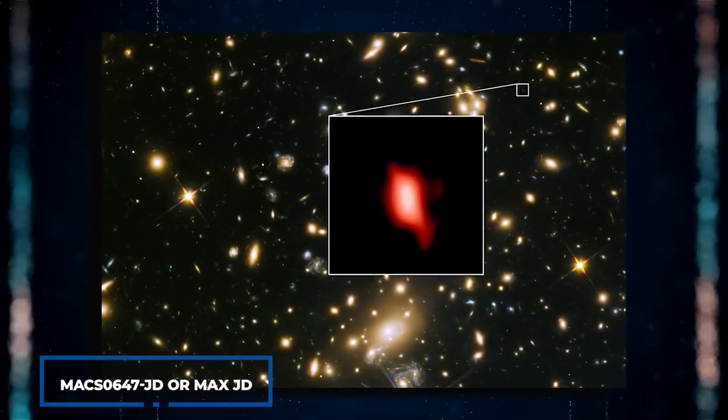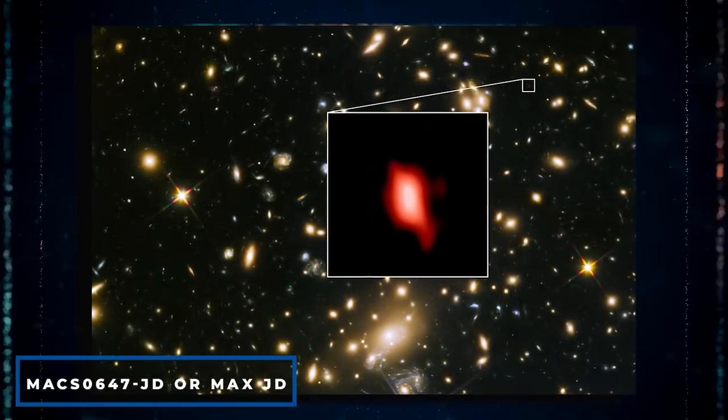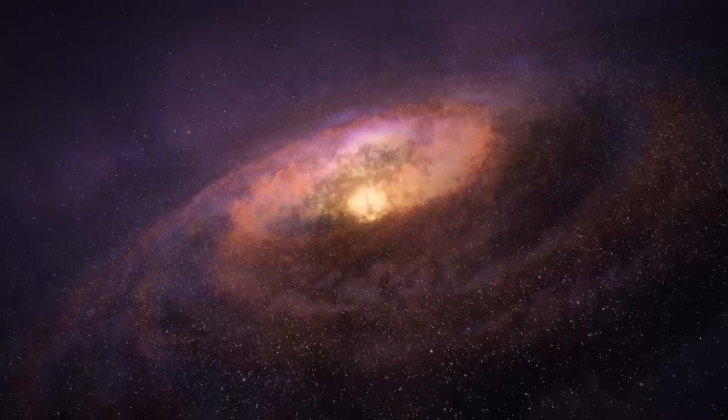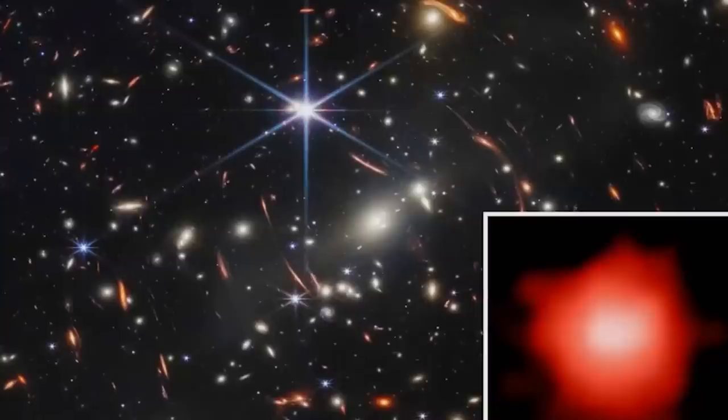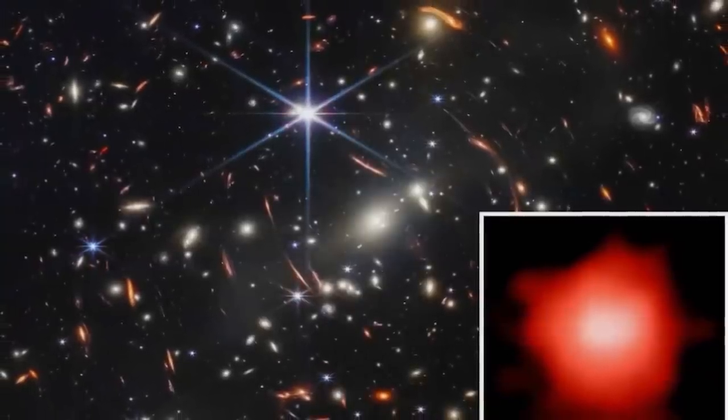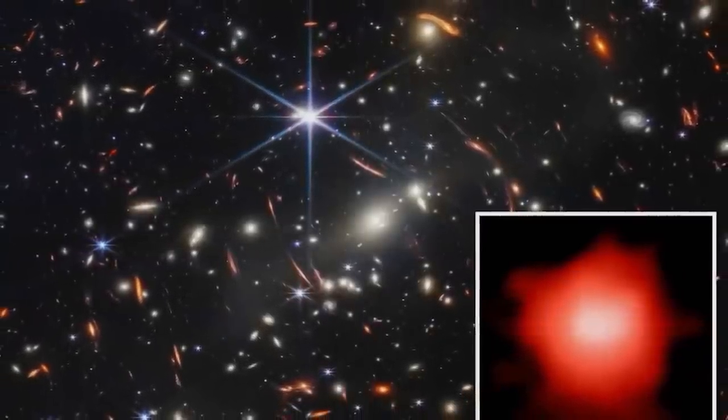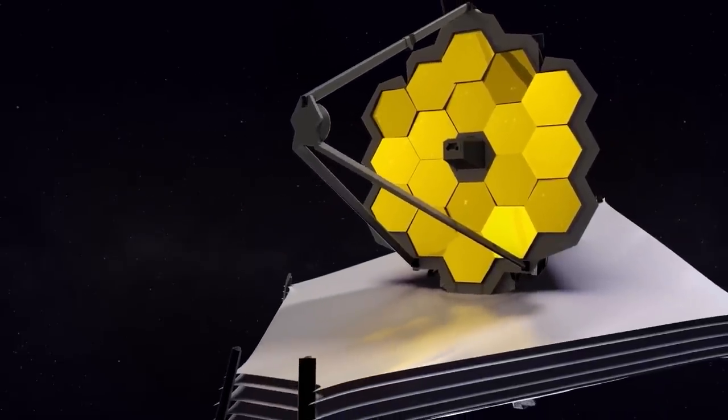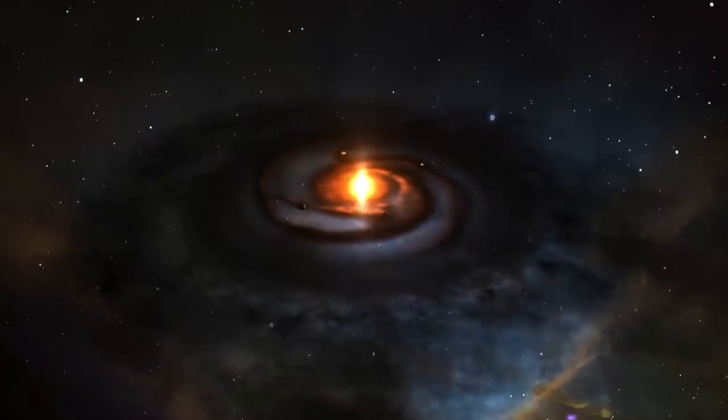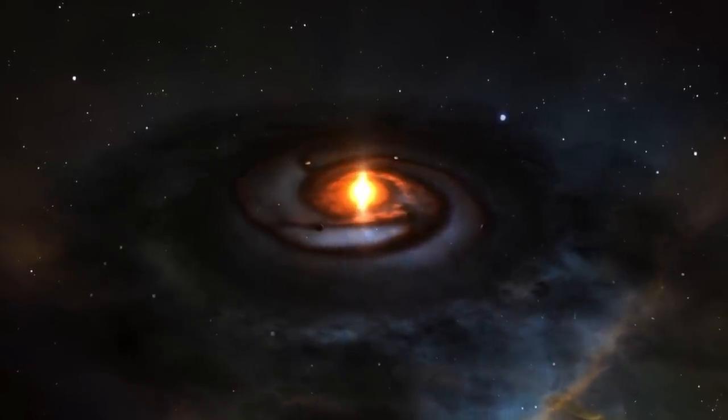Yet a twist of fate ensues. Enter MACS0647-JD, or MACS-JD, an exceptionally remote entity first observed a decade ago. Initially hailed as the most distant galaxy ever witnessed, MACS-JD remains among the earliest objects we can scrutinize in exquisite detail using the JWST. Typically, galaxies from the dawn of time elude our gaze, their faintness and remoteness concealing their existence.